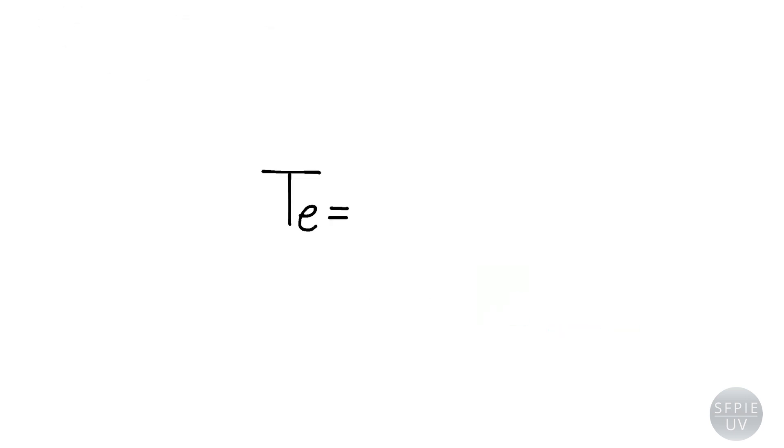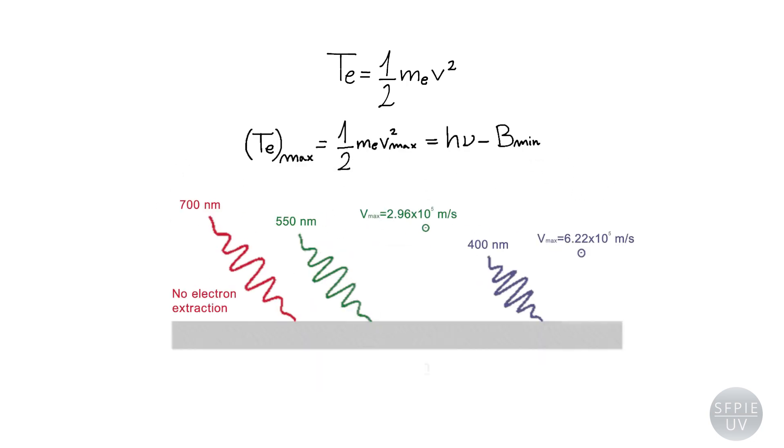Since the kinetic energy is equal to half the product of the mass and the square of the velocity, it is clear that the emitted electrons that are less bound, that is, with minimal b, have the maximum velocity. This makes it possible to understand the dependence of the maximum speed of the electrons with the frequency, or, equivalently, with the wavelength of the light used.